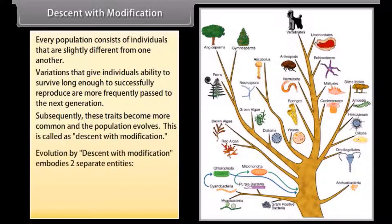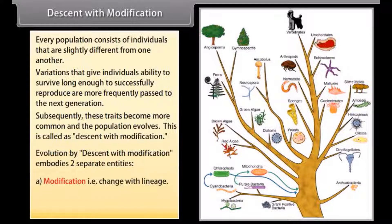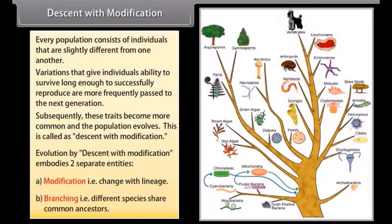Evolution by descent with modification embodies two separate entities: A. Modification, i.e. change within a lineage, and B. Branching, i.e. different species share common ancestors.